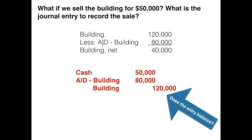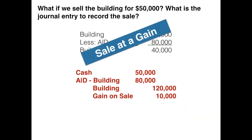So we got cash of $50,000. Accumulated depreciation is a contra asset carrying a credit balance, so to remove it we debit accumulated depreciation. The building carries a debit balance, so to remove it we credit the building for the $120,000 it's currently on the books at. Now we've removed the accumulated depreciation and the building and recorded our cash — but the entry doesn't balance. The book value was $40,000 and we received $50,000, so we have a gain of $10,000. A gain acts like revenue, so it's a credit, and now the journal entry balances.